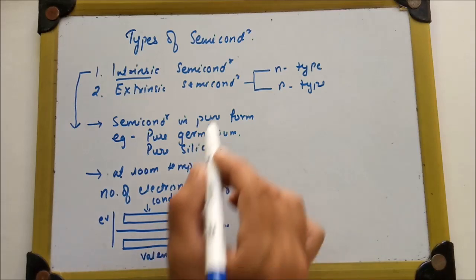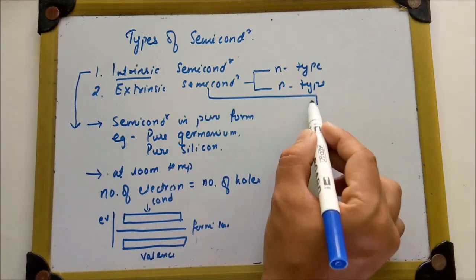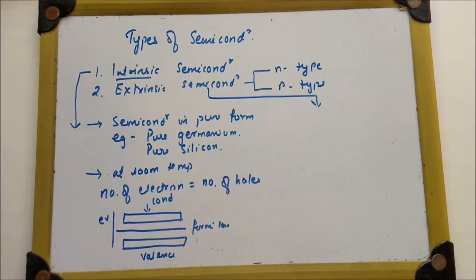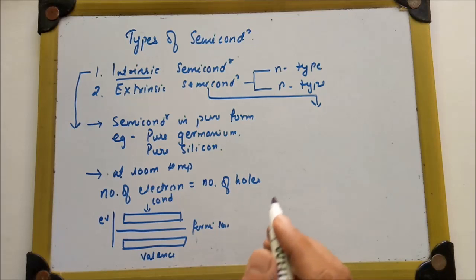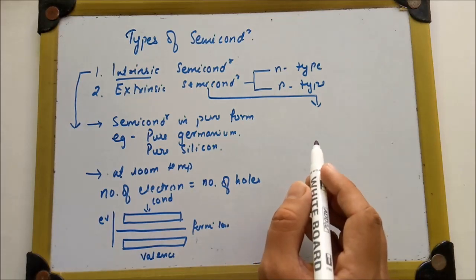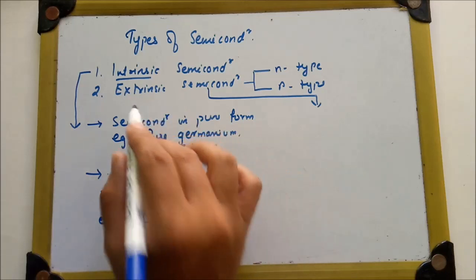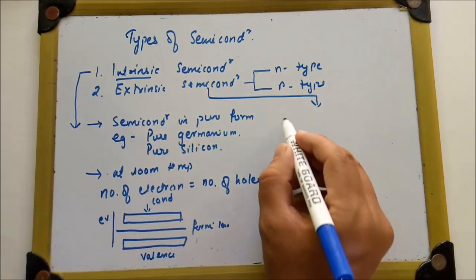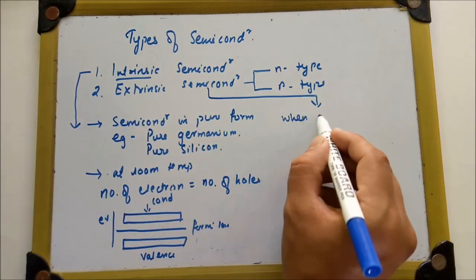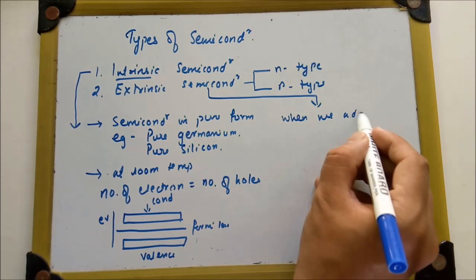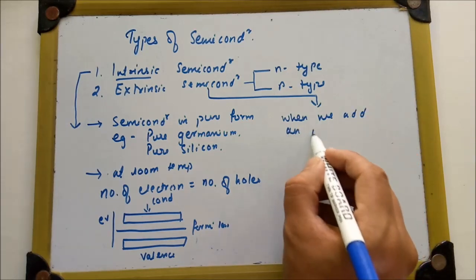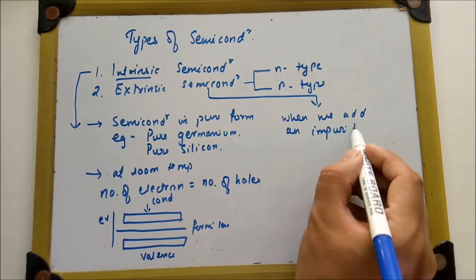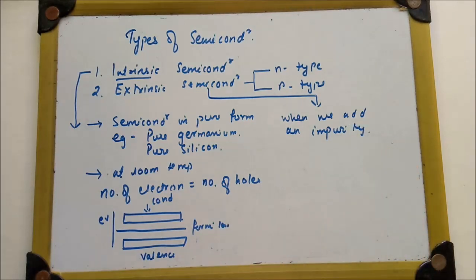Now, what is an extrinsic semiconductor? When we add impurity to a pure semiconductor to increase the charge carriers, it becomes an extrinsic semiconductor. If impurity is added to a semiconductor, it becomes the extrinsic semiconductor.